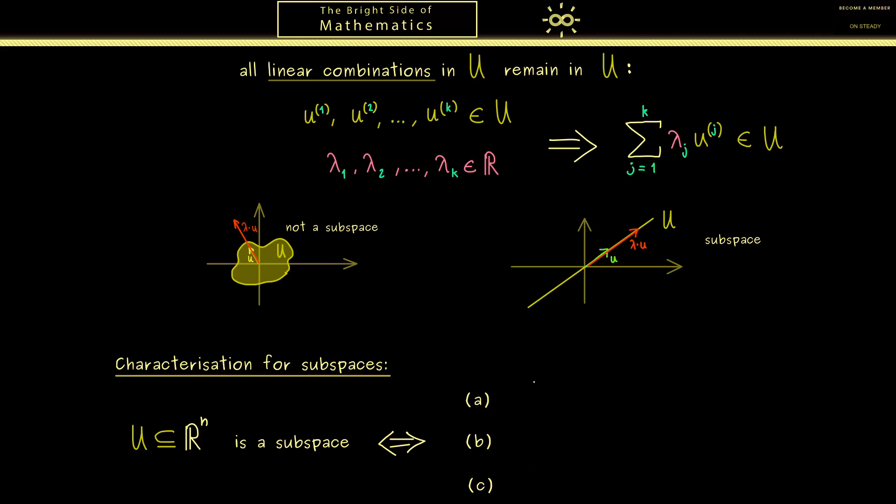Now the first one is that the zero vector from Rⁿ is in U. From the definition this is not hard to see. Because you can choose zero for all scalars and then this linear combination would be the zero vector. So you see this is an important property you can immediately check. In other words, if you see that zero is not an element of the subset you can immediately conclude that U is not a subspace.